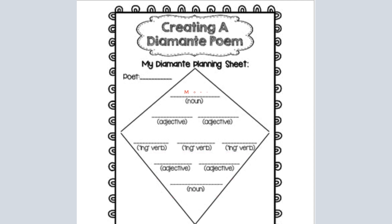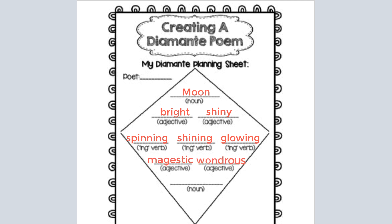Now let's try our own. We have moon for the noun, bright and shiny for adjectives. For our -ing verbs: spinning, shining, and glowing to describe the moon. It's majestic and wondrous, and the final noun is galaxy. So you can see all the parts of speech — I decided to write about the moon. It's bright and shiny as adjectives, spinning, shining, and glowing as -ing verbs, majestic and wondrous as two more adjectives, and then galaxy as another noun that relates back to the moon.